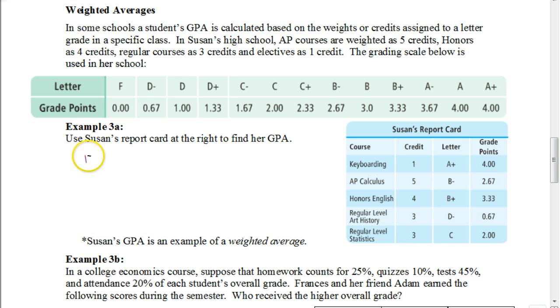And we're going to do that for each of these courses. So we would take one times four plus the next class is AP calculus, which has a weight of five. And for that one, her grade point that she earned was two point six seven. And then the next class was the honors English, which was given a weight of four. And the grade point that she earned was three point three three.